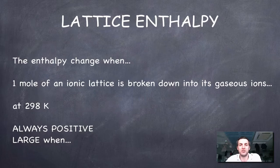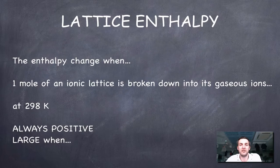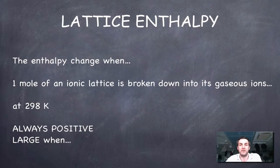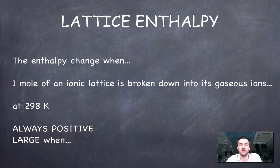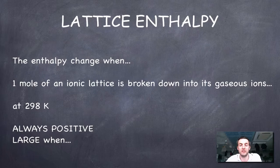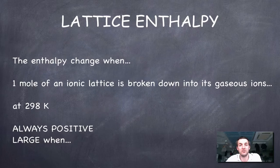And like most enthalpy changes this is defined and it's an important definition to know and it starts with the enthalpy change when. This enthalpy, the lattice enthalpy, refers to the enthalpy change when one mole of an ionic lattice is broken down into its gaseous ions at 298 Kelvin. This is a very artificial situation. It's not normal conditions and it's something that's quite hard to carry out.